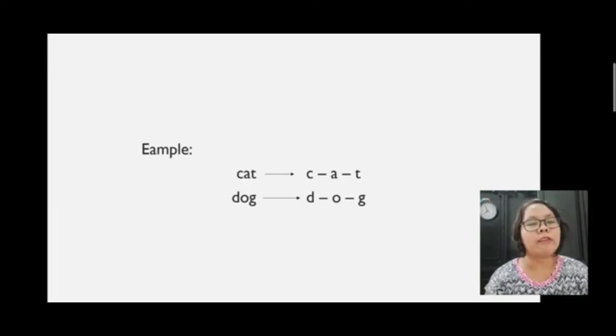Same with the word dog. How many? Again, there are three: d, o, g.